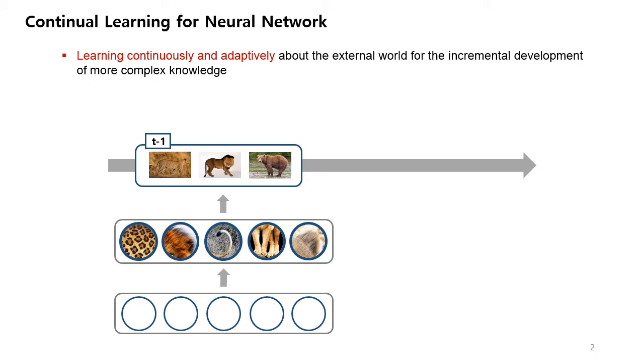As you probably know, continual learning is a very important problem in neural networks, which is getting a lot of attention these days. Continual learning is a method of gradually advancing knowledge while learning about sequentially arriving tasks, like the human brain.